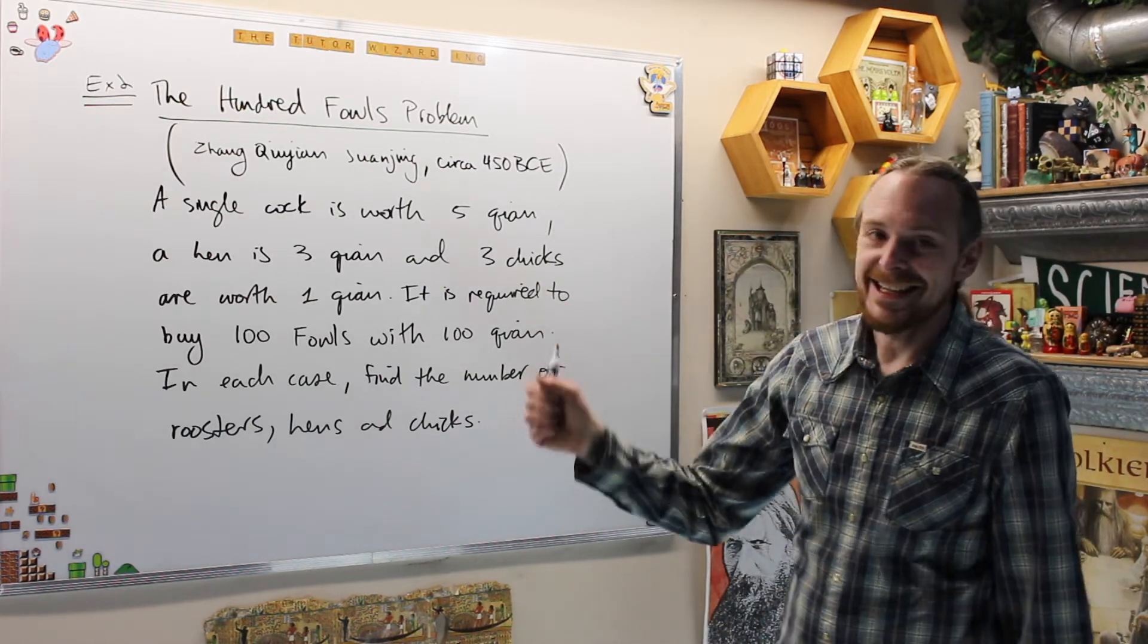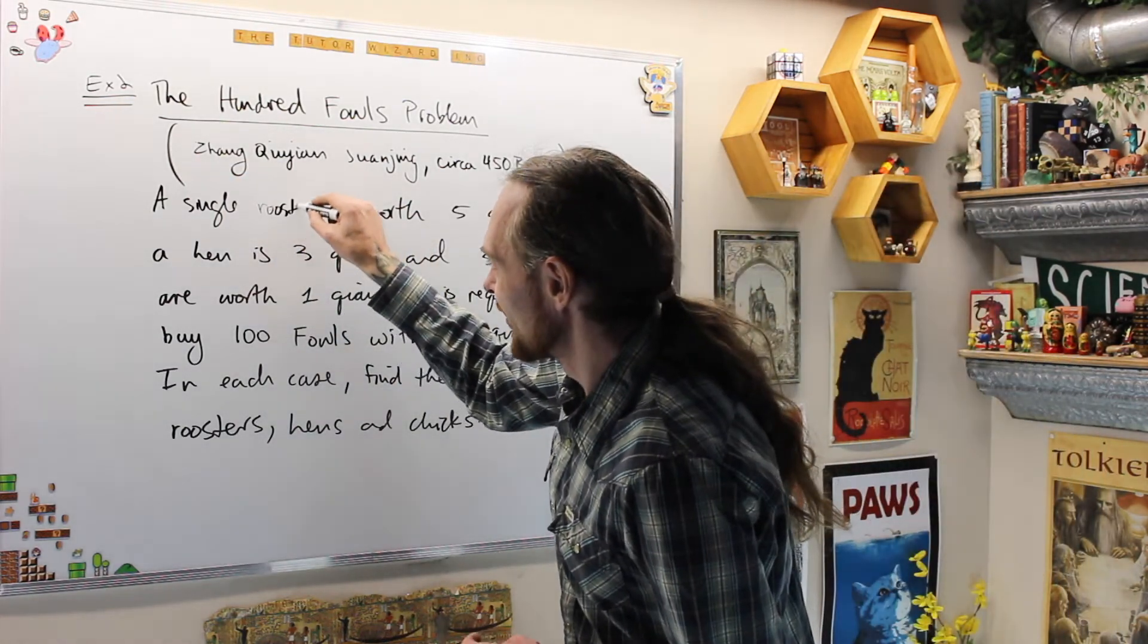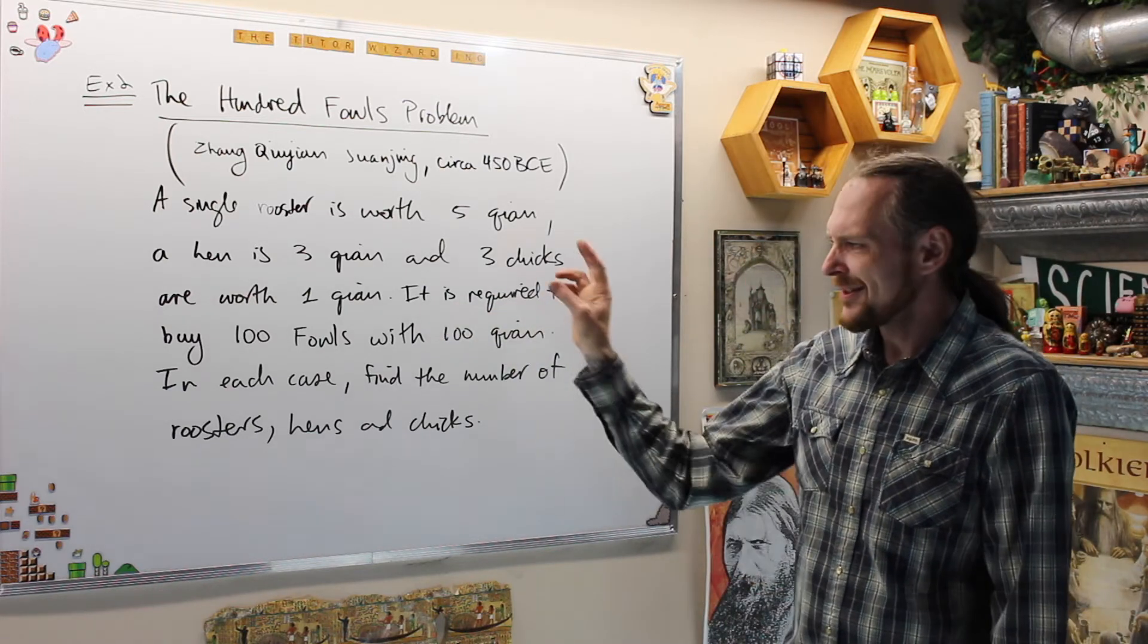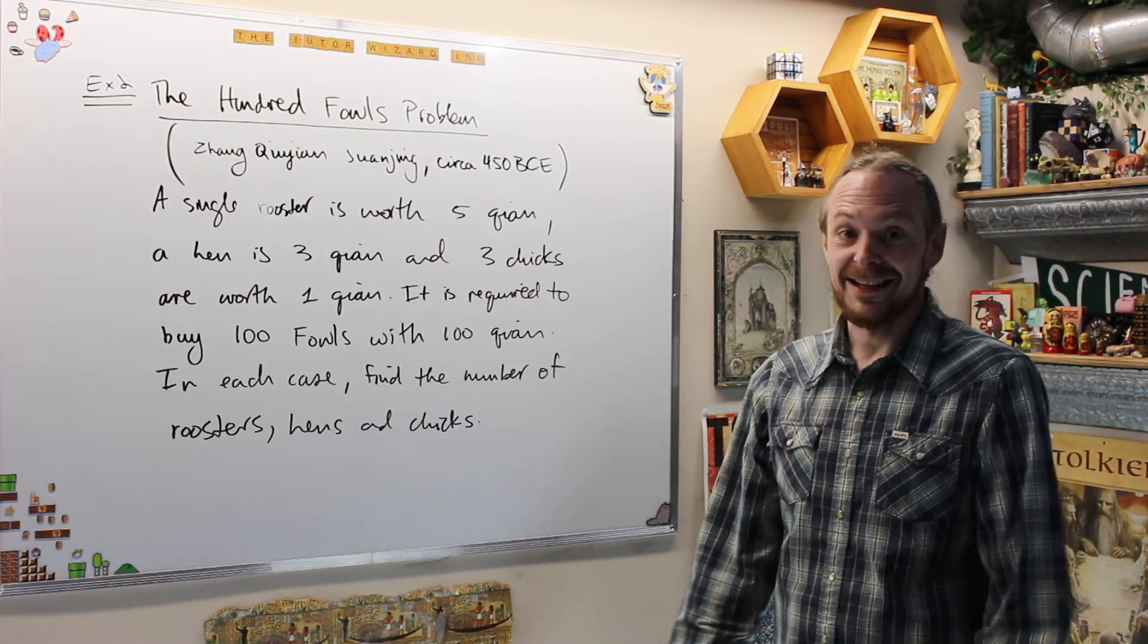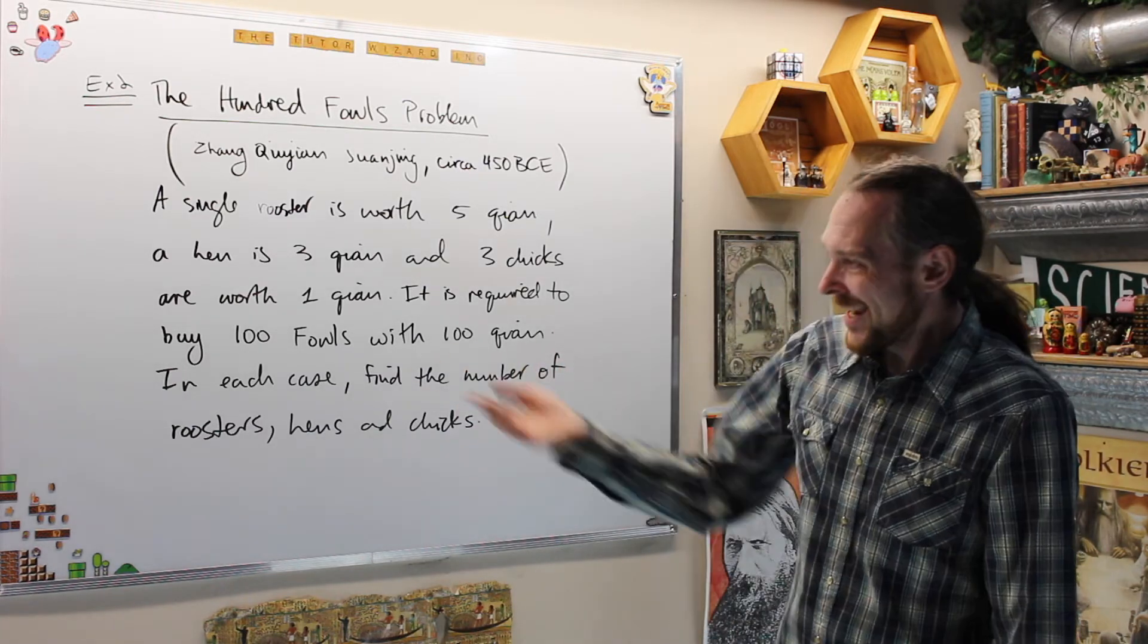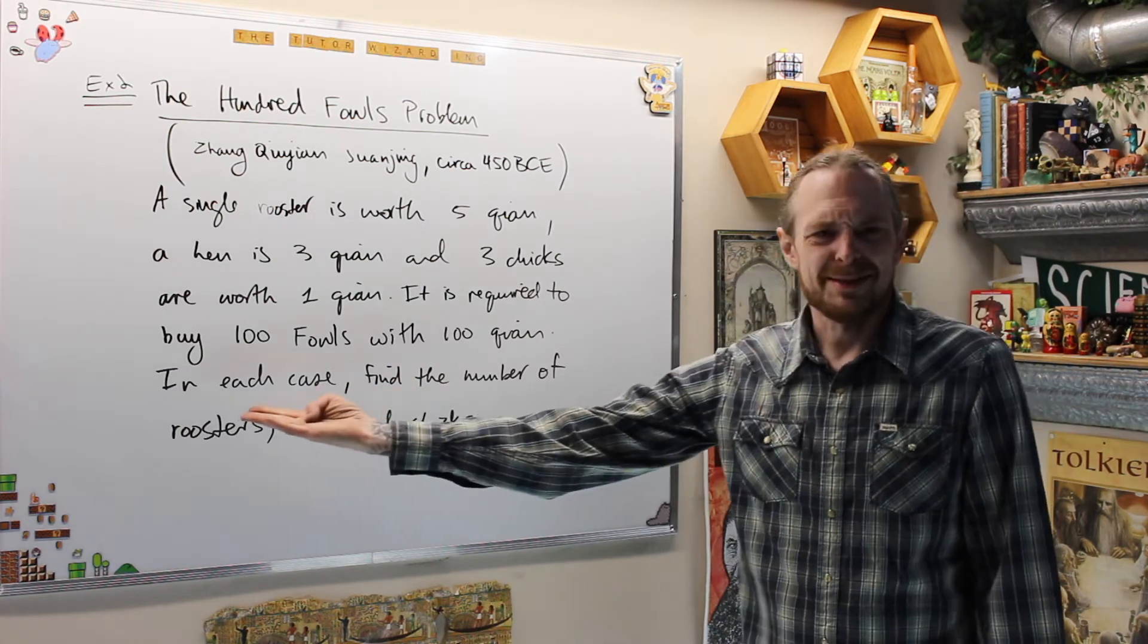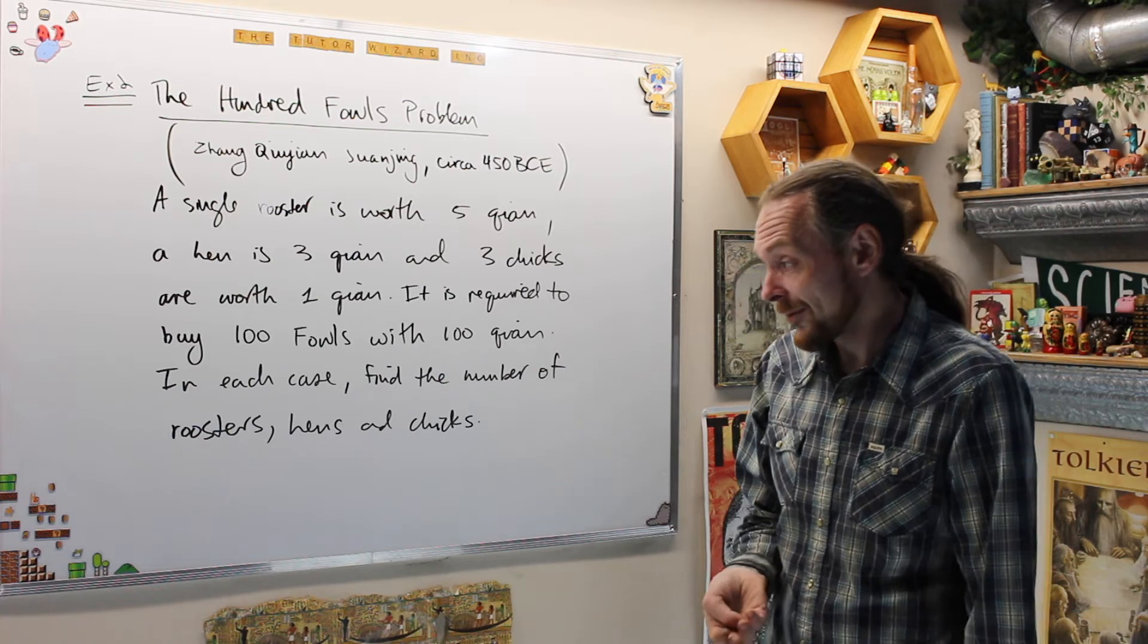So what does it say? A single rooster is worth five Xi'an. A hen is worth three Xi'an, and three chicks are only worth one Xi'an, which means there is a conversion there for your brain. If we reverse that, they should have been nice and phrased that as one chick is one-third Xi'an. And then the problem is, why it's called the hundreds fowl problem, is you're supposed to buy a hundred birds with a hundred Xi'an. This is their cryptic way of phrasing it, for in each case, find the number of roosters, hens, and chicks.